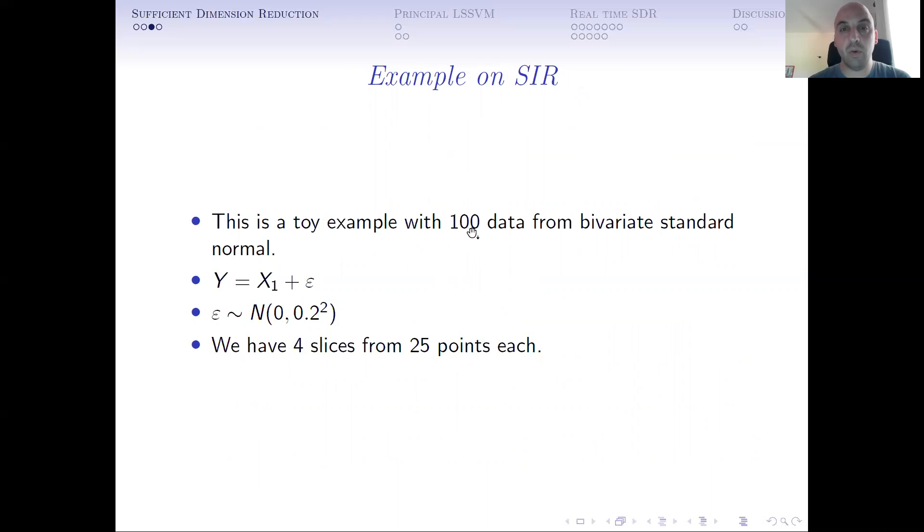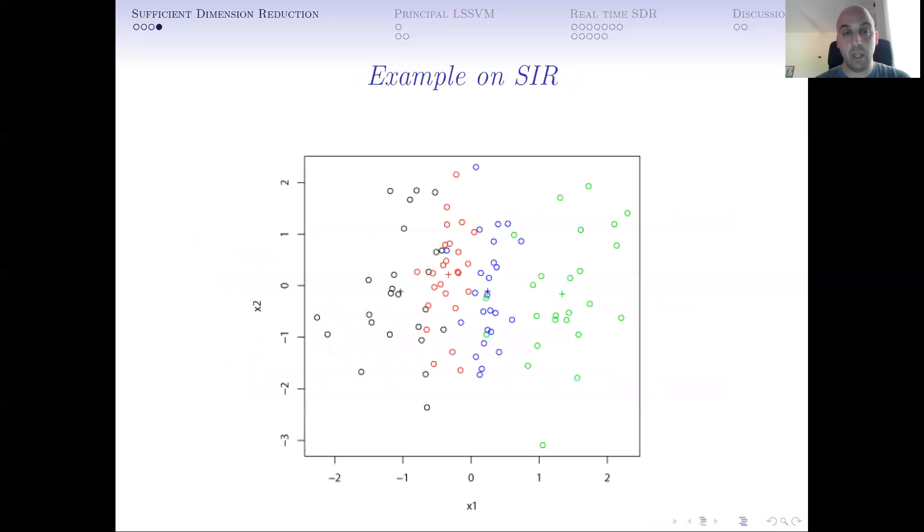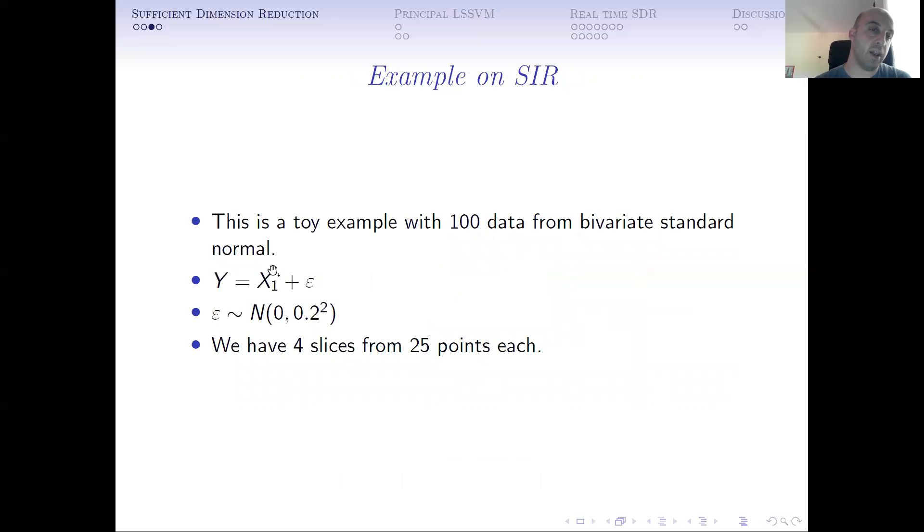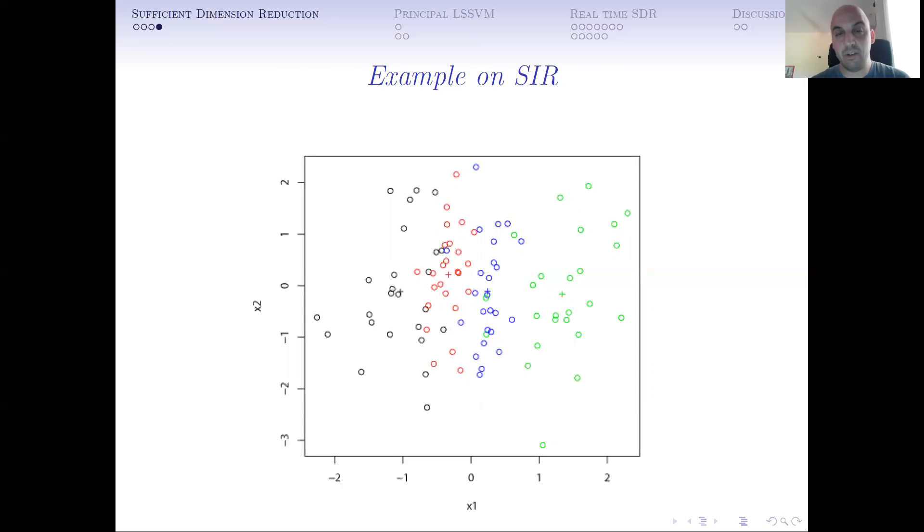This is a toy example on sliced inverse regression where we have 100 data points from standard normal distribution. Y depends only on one of the two x variables, x1, with some error. Then we discretize y by using four slices, 25 points each, and project the points on the x1, x2 plane. These 25 black points are the ones with lower response value y, these green points the ones with higher response value. There are 25 circles and one cross—the cross is the mean of each slice. If you connect this mean with the overall mean, you get a line that is parallel to x1, which is the variable that affects our response variable. So this is roughly how sliced inverse regression works without showing any math.